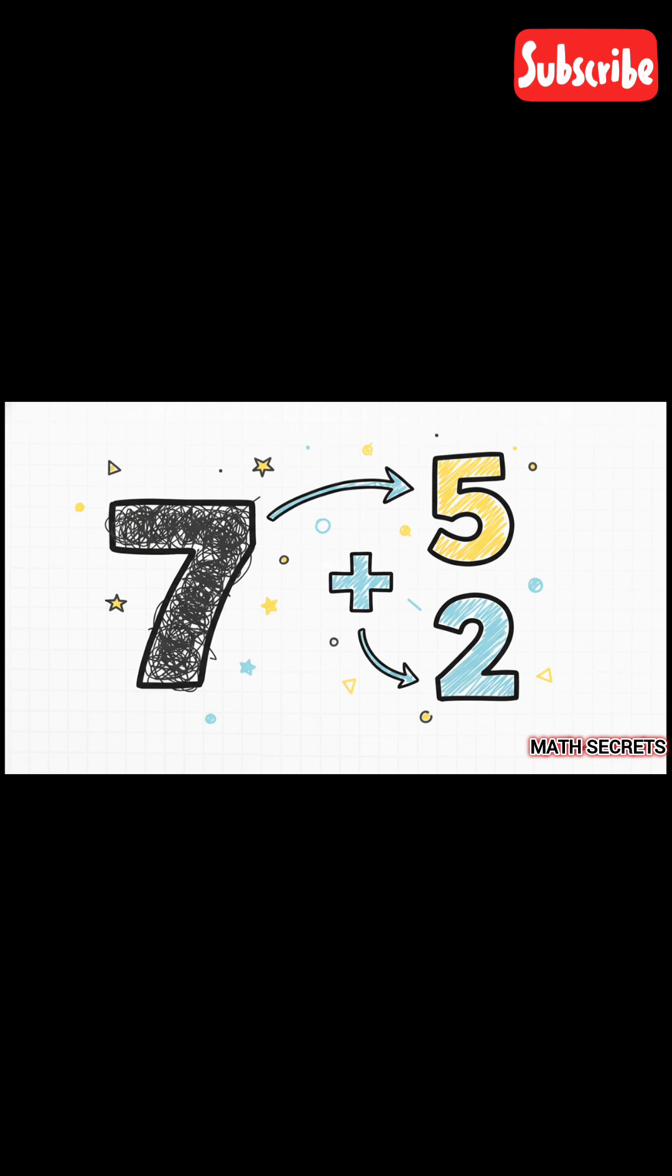We're going to stop thinking about the number seven. Instead, we're going to start thinking about it as five plus two. With that one simple shift, you can turn a difficult number into two of the absolute easiest numbers to multiply in your head.